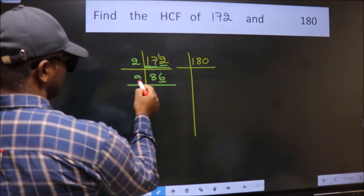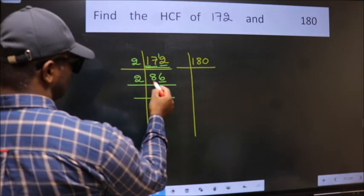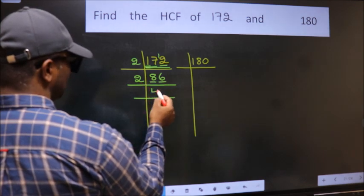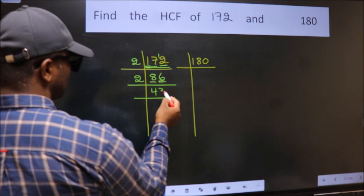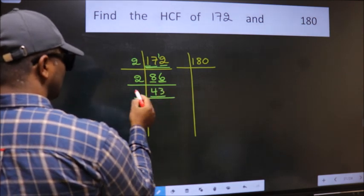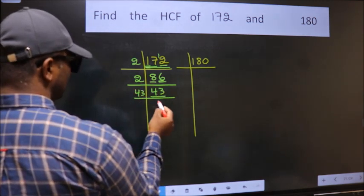Last digit is even, so take 2. First number 8. When do we get 8 in 2 table? 2×4=8. The other number 6. When do we get 6 in 2 table? 2×3=6. 43 is a prime number, so 43×1=43.